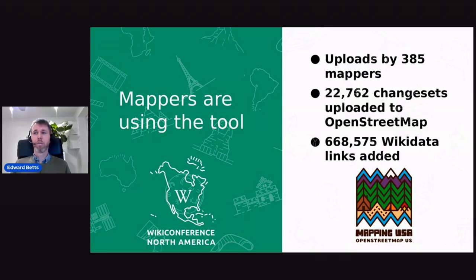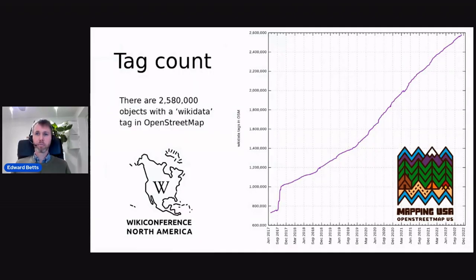People are using my software. We've got 385 people using it and they've uploaded more than half a million Wikidata links. This is a count of the Wikidata links that appear in OpenStreetMap — there's more than two and a half million. You can see it's been growing over time; I started tracking this in 2017.